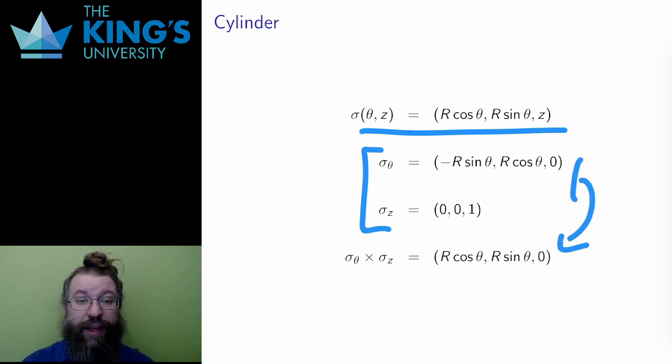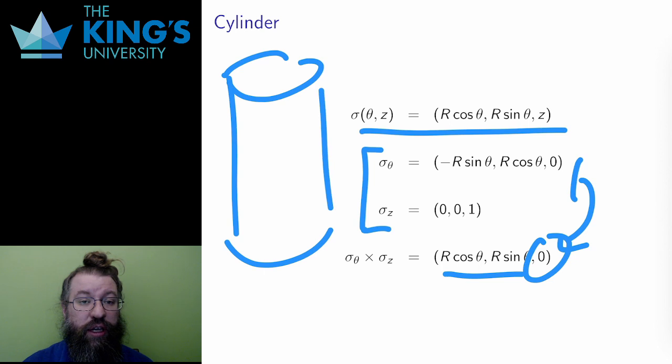The result is a vector which has no z component, but points outward in x and y. And this also makes sense, since the cylinder has vertical walls, so pointing outward should be in a horizontal direction.